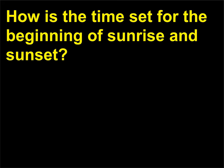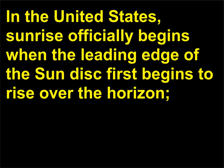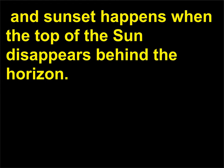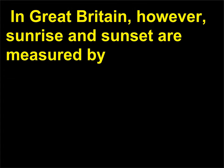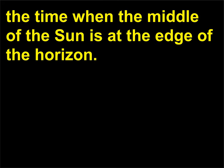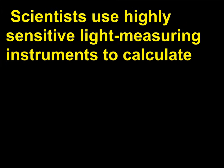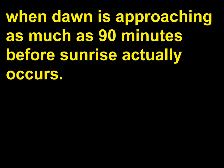How is the time set for the beginning of sunrise and sunset? Sunrise happens when the sun first begins to rise over the horizon, and sunset happens when the top of the sun disappears behind the horizon. In Great Britain, however, sunrise and sunset are measured by the time when the middle of the sun is at the edge of the horizon. Scientists use highly sensitive light-measuring instruments to calculate when dawn is approaching as much as 90 minutes before sunrise actually occurs.